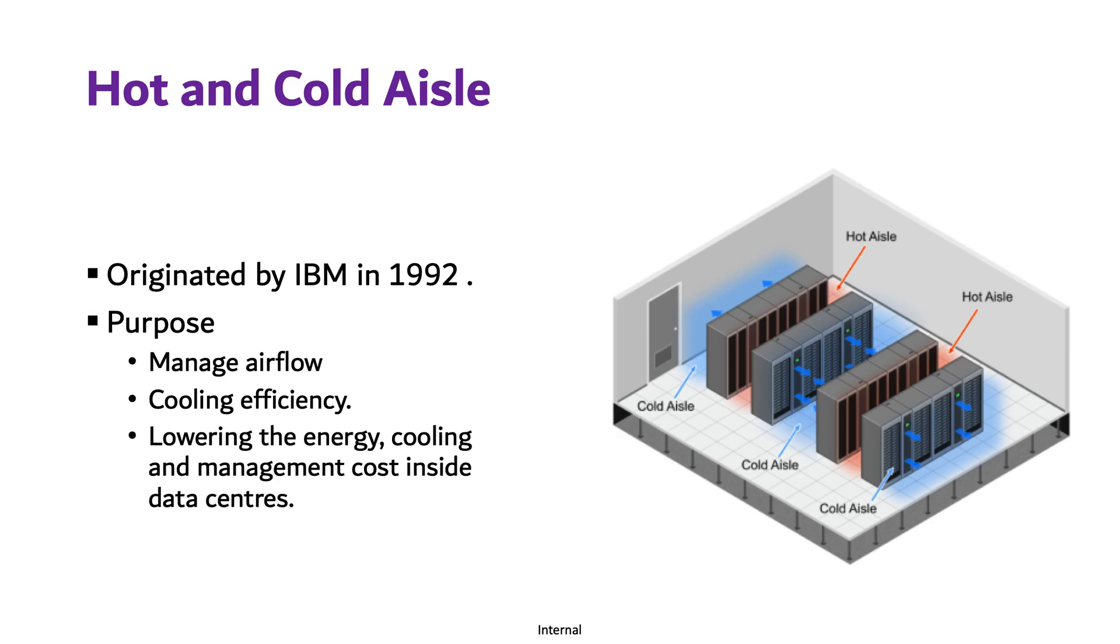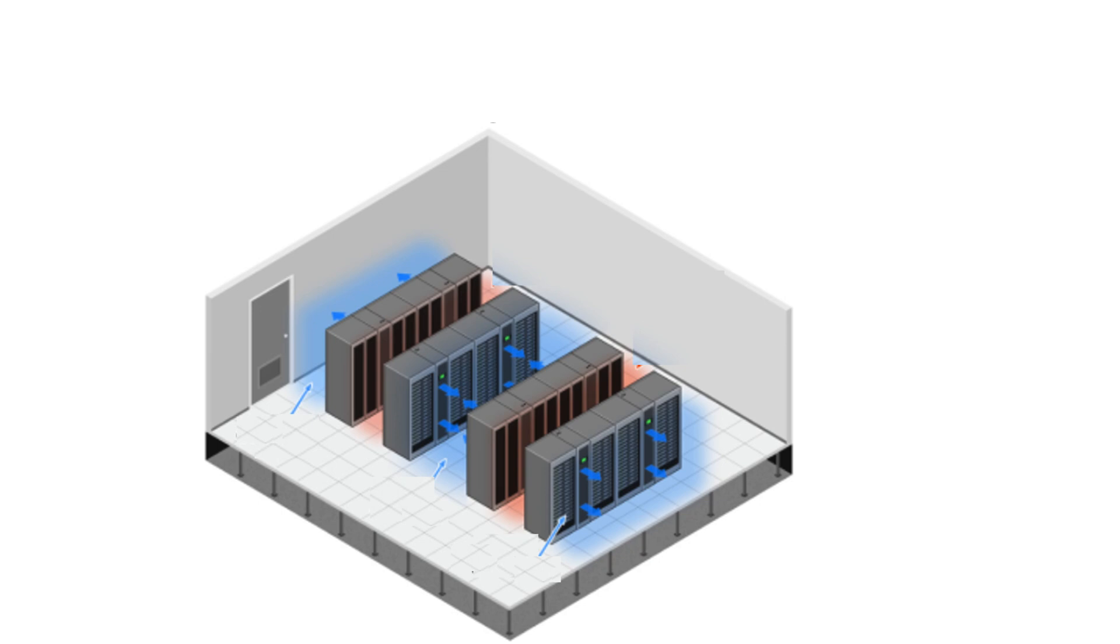In data centers, rows of server racks are oriented in a way that the front of the servers face each other and the back of the servers face each other. So the cold aisle is the aisle where the front of the servers face each other.